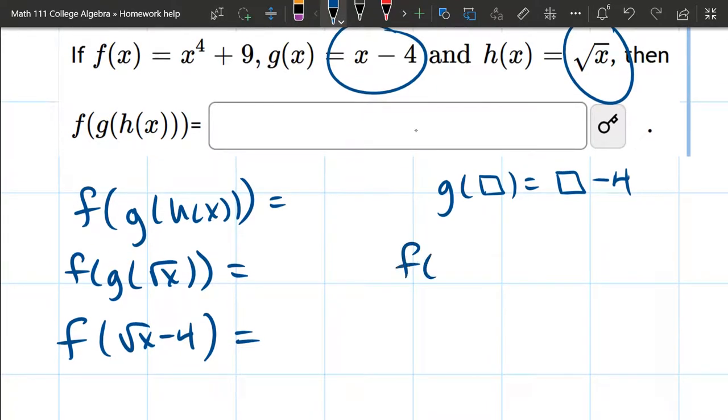So I'm going to write f. What does it do to a box? x to the 4th. That should be box to the 4th plus 9.